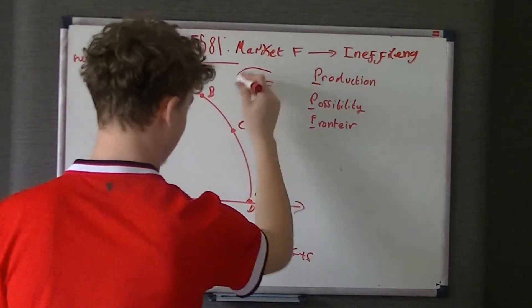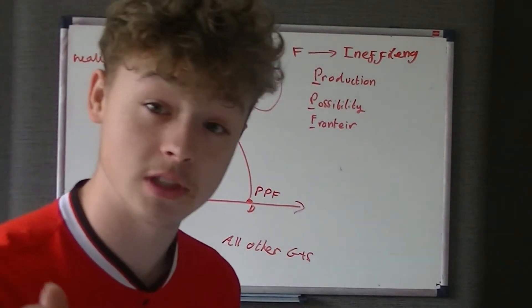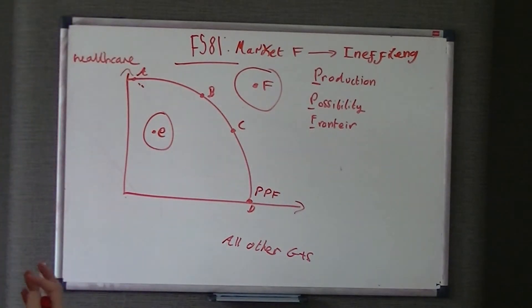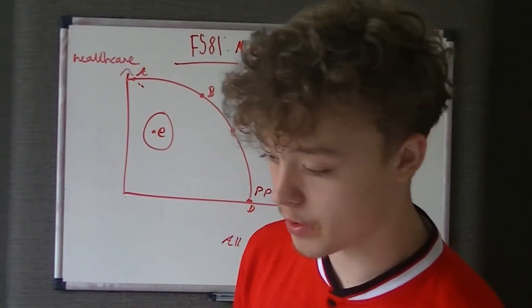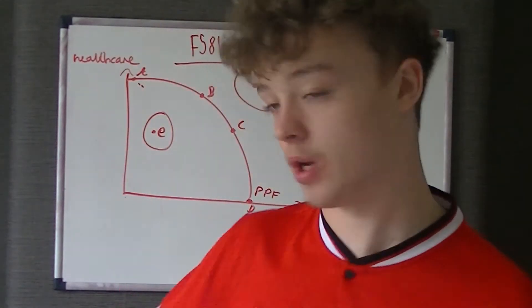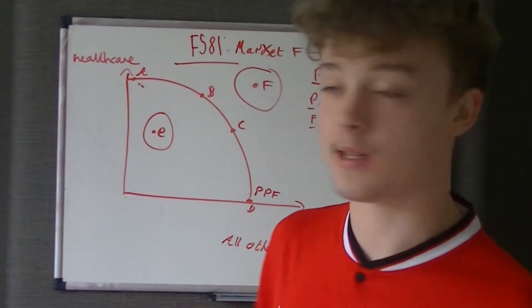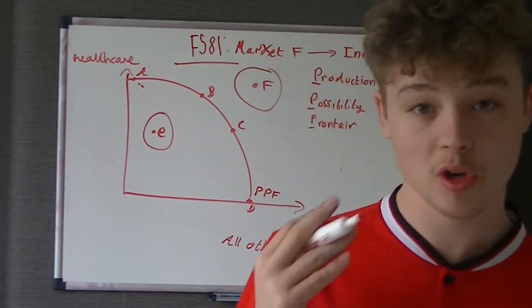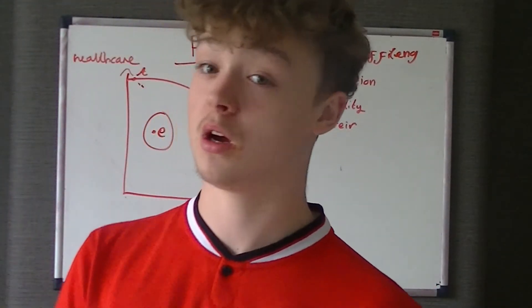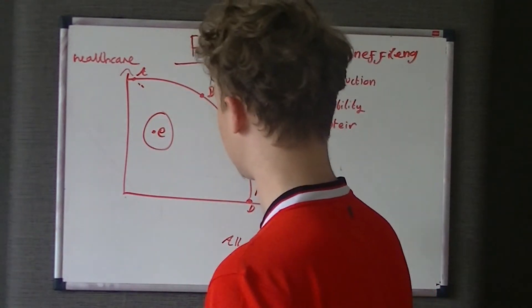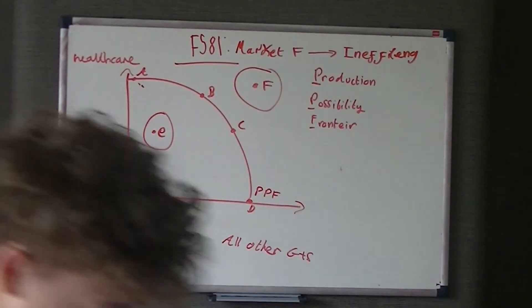What can we say about point F? F is situated outside the PPF, so we can't produce any more with our current allocation of resources than along the PPF. F means we can't physically produce it at the given moment in time. But if we find an improvement in technology, we can shift the PPF outward — that's economic growth. At the moment, with our current resources, F is what is called an unobtainable point.